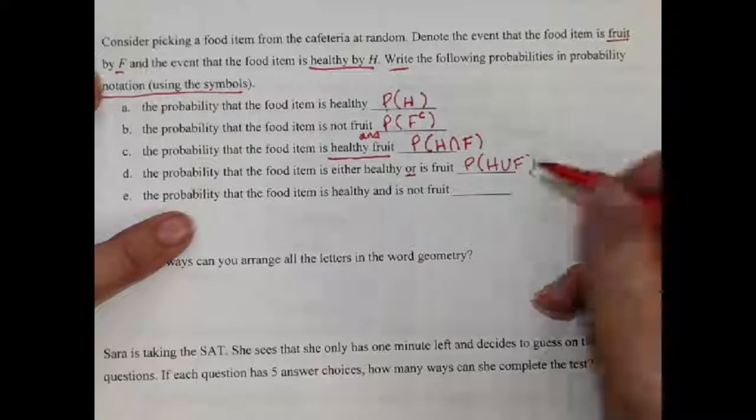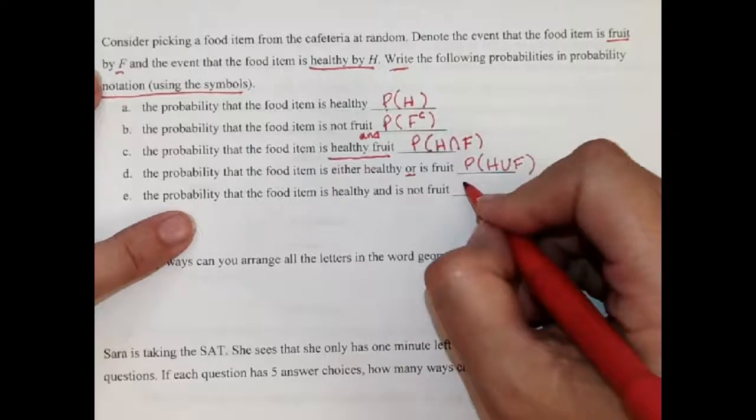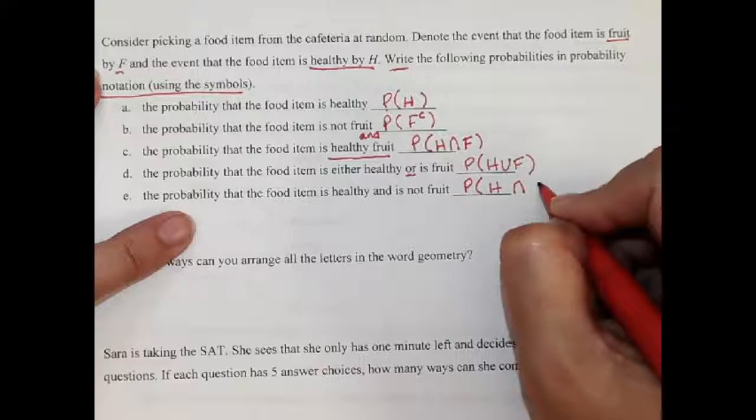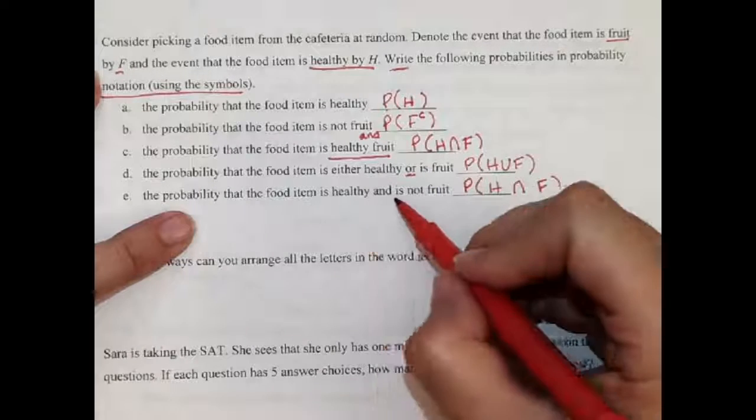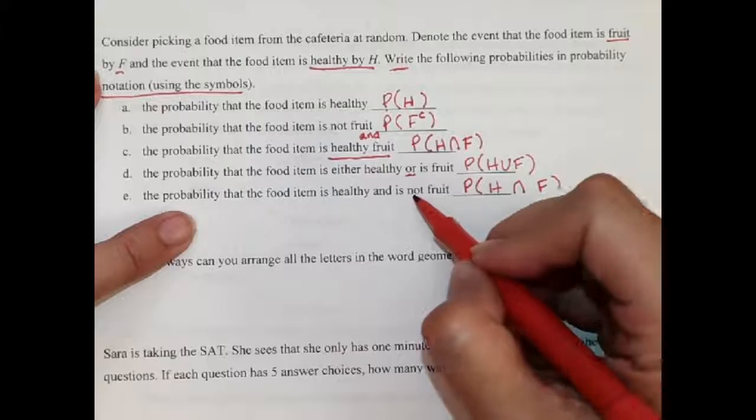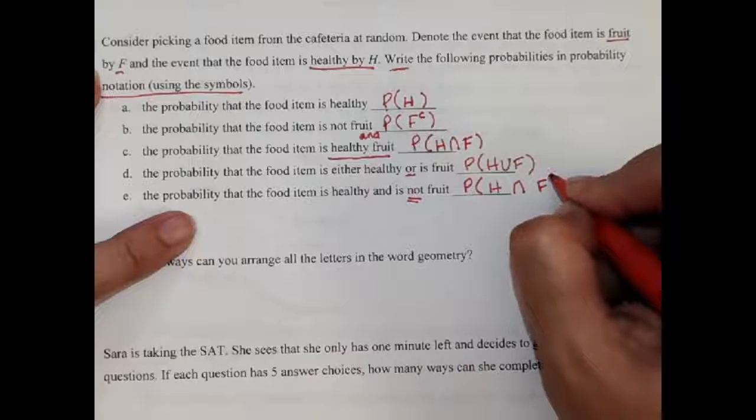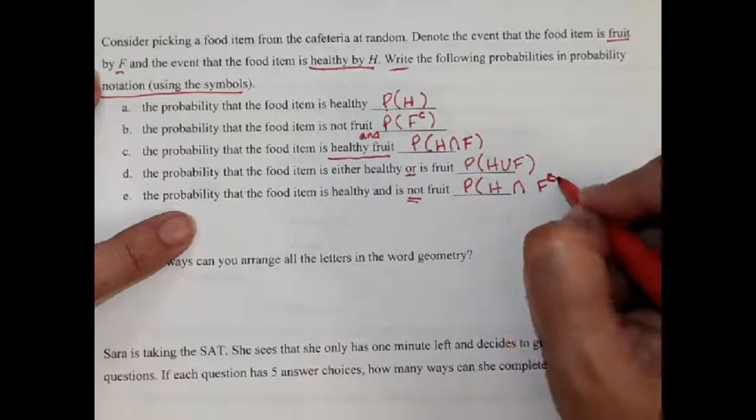The probability that it's healthy and is not fruit. Well, if I wrote it like this, healthy and fruit, that's healthy and is fruit. But I want to put not on there. So I put the little C just on the F part. So that's healthy and not fruit.